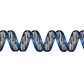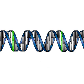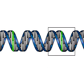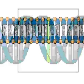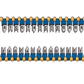The duplication of DNA is known as replication. In eukaryotes, replication begins at specific initiation sites. There are many initiation sites on a eukaryotic chromosome. At each initiation site, replication begins with the separation of parent strands.